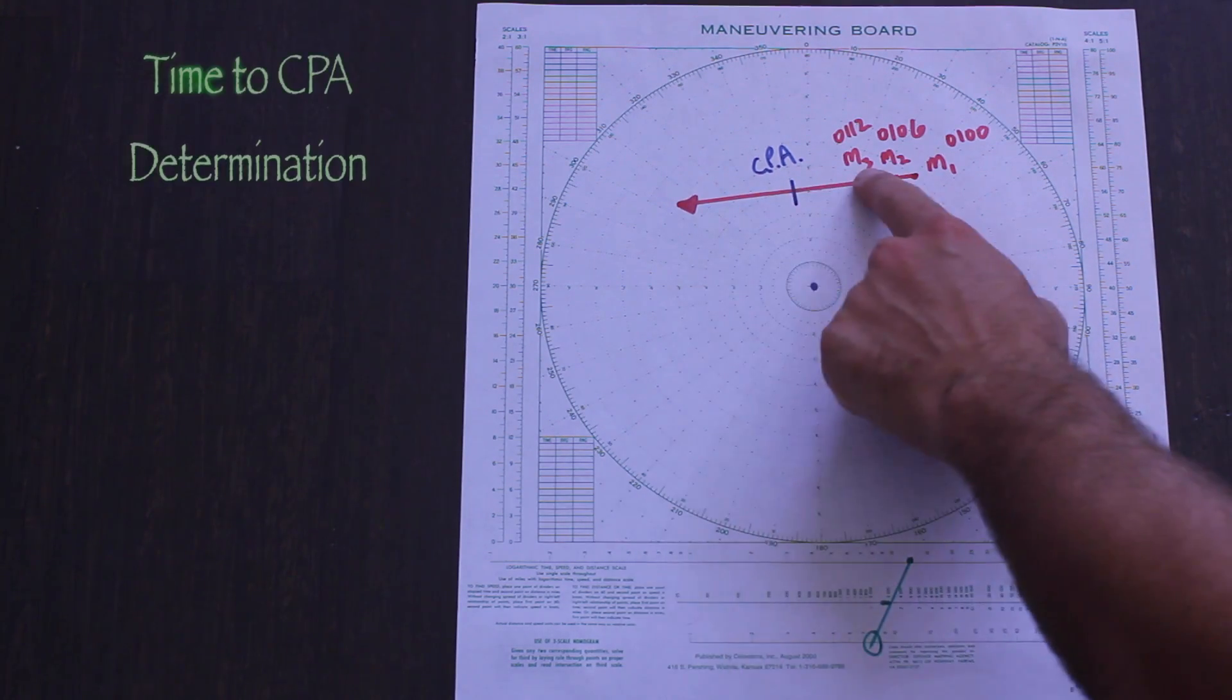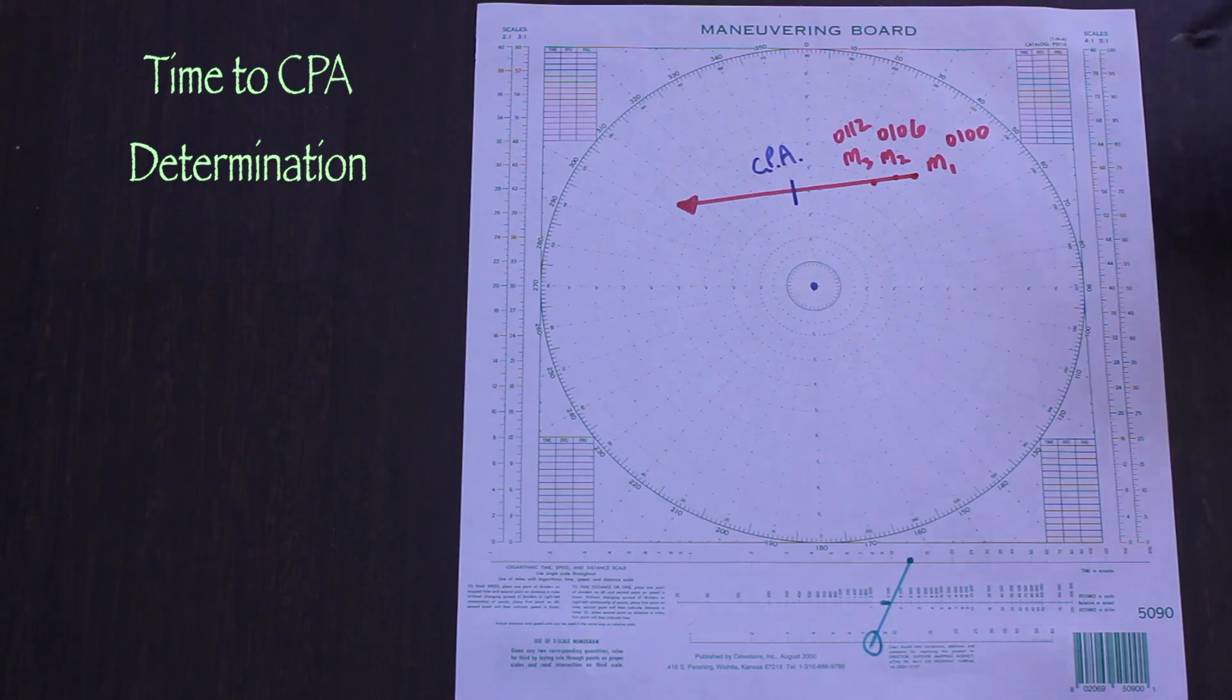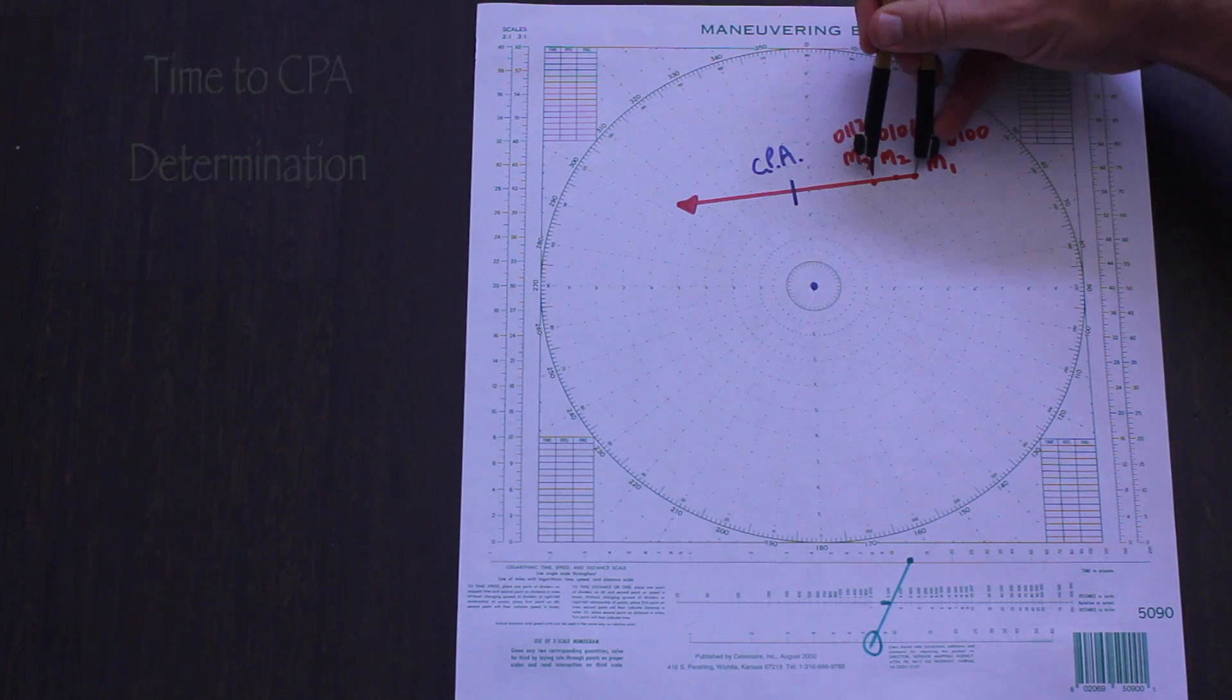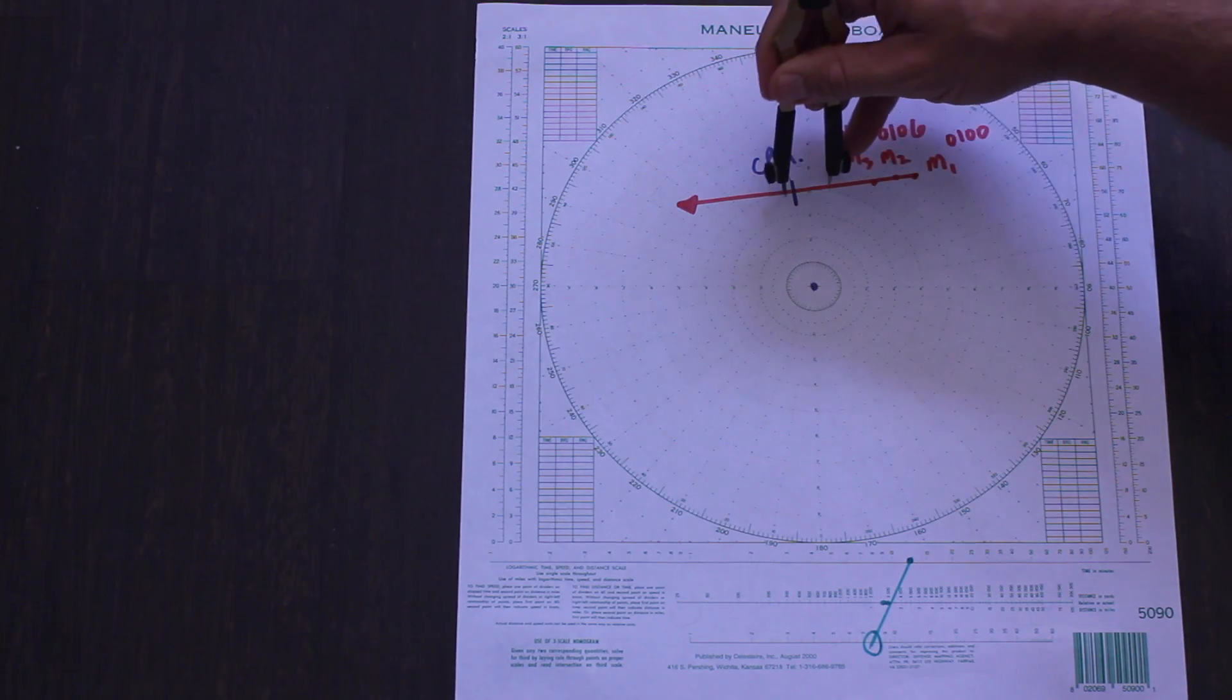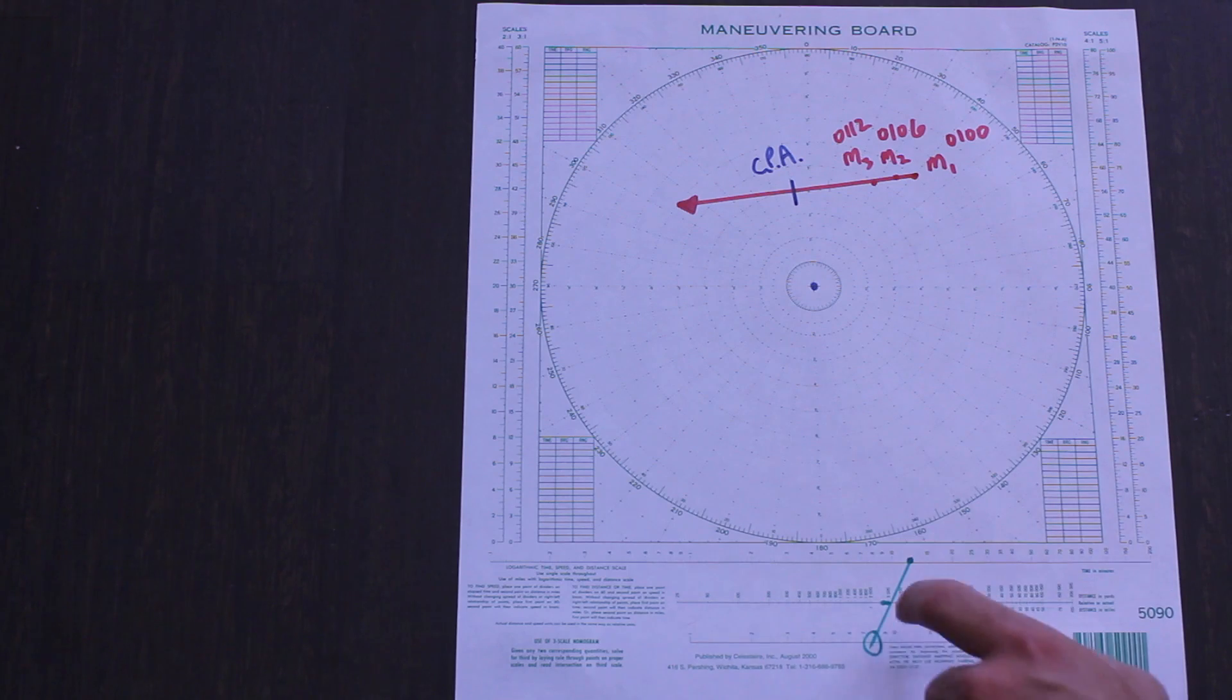A quick and dirty way of determining the time to CPA is to walk your dividers down the relative motion line. If the measured distance is 12 minutes, you can just add 12 minutes for each spread of the dividers. However, it is not as accurate as using the nomogram.